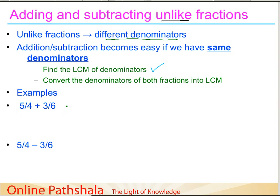Let us take this first example where we are supposed to add the fraction five by four with three by six. You can see that these are unlike fractions — they both have different denominators. The first step is to convert them into like fractions, so we need to find the LCM of the denominators, which are four and six. We start the process of dividing to find the LCM.